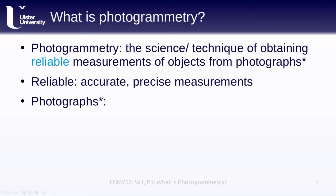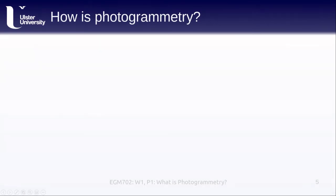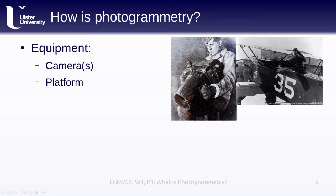When we say photographs, what we used to mean was film photographs, but most of the time now we're talking about digital photographs or scanned copies of film photographs. To do photogrammetry, we first need some equipment, starting with cameras. This is an example of an old aerial mapping camera from the early 20th century — it weighs somewhere around 75 pounds — so we mount it on some kind of platform, typically an airplane, and go out to acquire our photos.